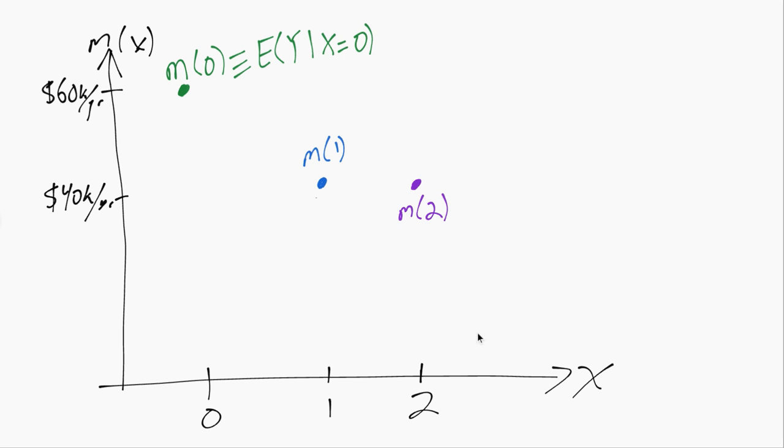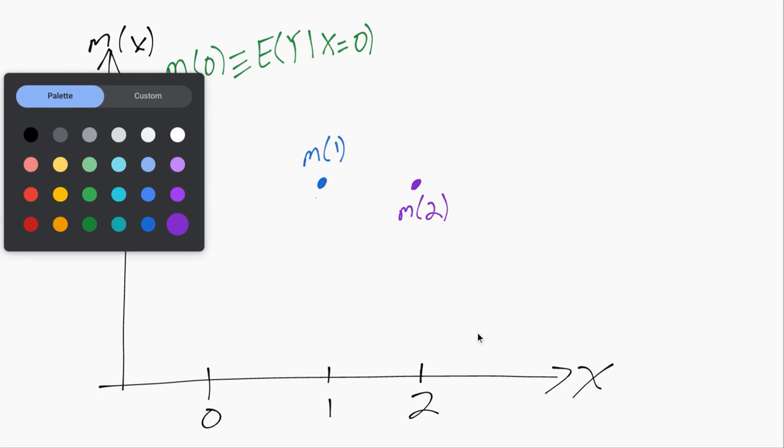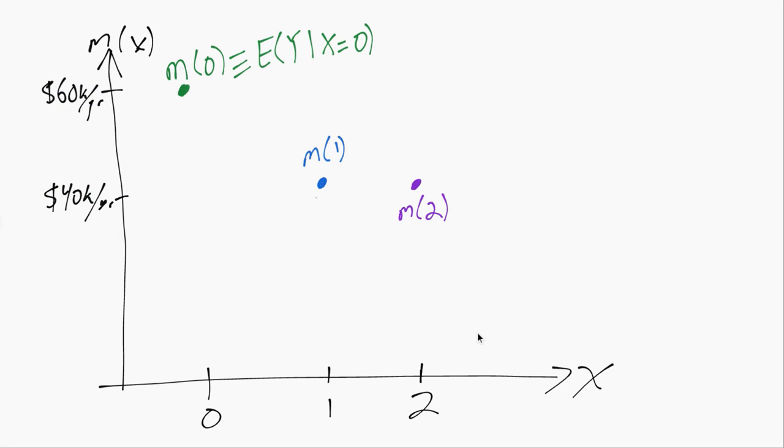So we can see just by looking at it here that there's no way we can draw a straight line through all three of these points. If we try to draw a straight line through the first two, we'll miss the third point. If we try to draw a straight line through the second and third points, we'll miss the first point.